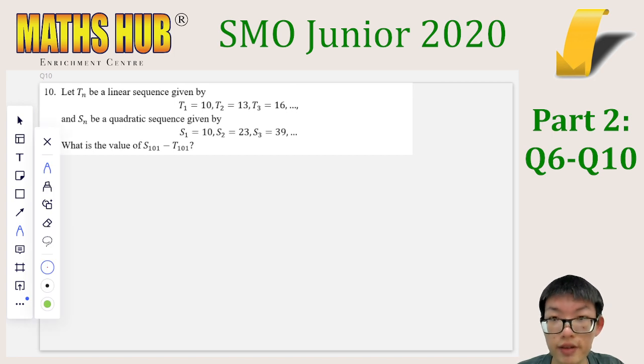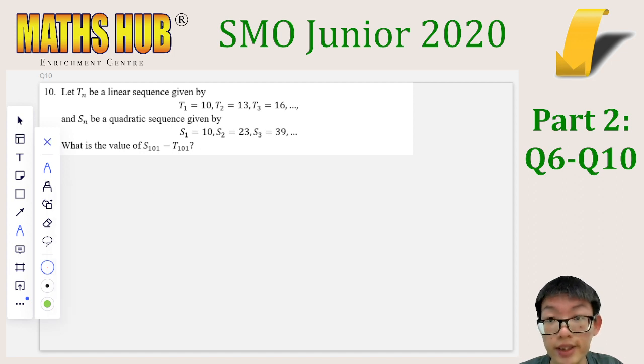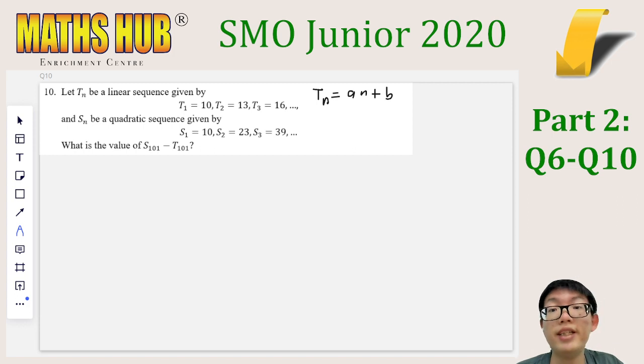Finally, let's look at question 10. We have Tn as a linear sequence and Sn as a quadratic sequence. We are asked to find S101 minus T101. To make it very clear, when we say that Tn is a linear sequence, it means something like Tn equals to An plus B. And when we say that Sn is a quadratic sequence, it means Sn is something like Cn squared plus Dn plus E. Certainly, this is one possible way to go about it. We can look for the value of Tn, specifically T101, by finding A and B based on the first few terms. And likewise, we can do the same for C, D, and E.